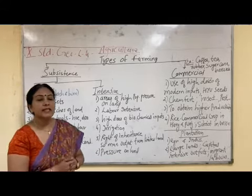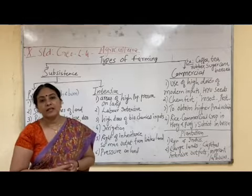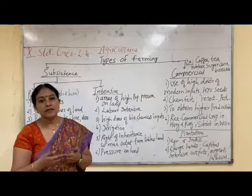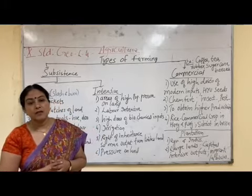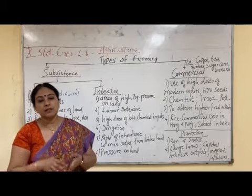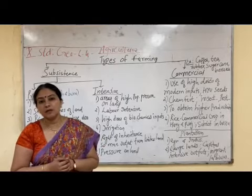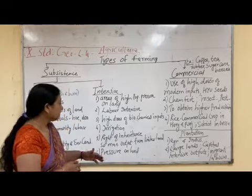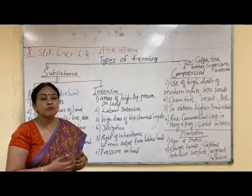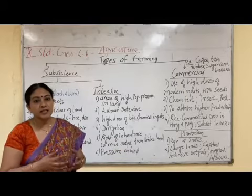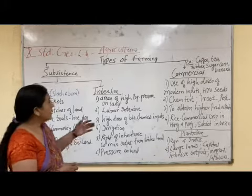In intensive subsistence farming, the piece of land is very small. The reason is India's right of inheritance — children receive pieces of land from their parents. If a father has a big piece of land but two sons, it is divided between them and each son gets a smaller piece. Because of the right of inheritance, land size has become small, pressure on the land is more, and every farmer wants maximum output from the limited area, so more and more cultivation is done in the same piece of land.